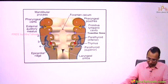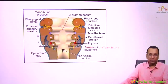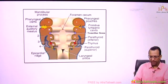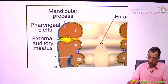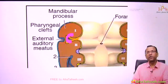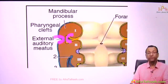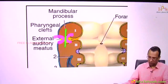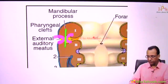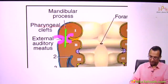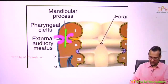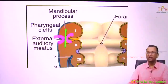Before drawing the diagram, note the tympanic membrane: it has all three germ layers. The inner epithelium of the tympanic membrane is from the endoderm of pharyngeal pouch 1. The outer epithelium is from the ectoderm of cleft 1. And the connective tissue in between is from the mesoderm of the pharyngeal arches. It separates the middle ear cavity from the external ear canal.